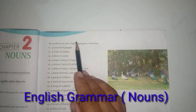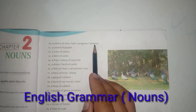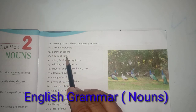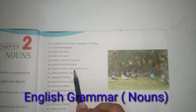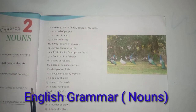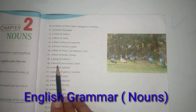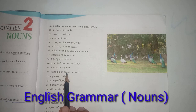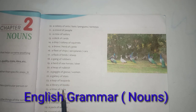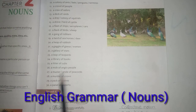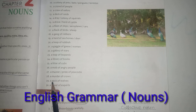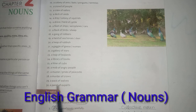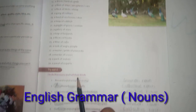Further examples: a colony of ants, a colony of bats, a colony of penguins, a colony of termites, a crowd of people, a crew of sailors, a deck of cards, a herd of cattle, a fleet of ships, a fleet of airplanes, a flock of birds, a flock of sheep, a gang of robbers, a heap of rubbish, a gaggle of geese, a galaxy of stars, a leap of leopards, a library of books, a mob of angry people, a murder of crows, a pack of wolves, a panel of experts.